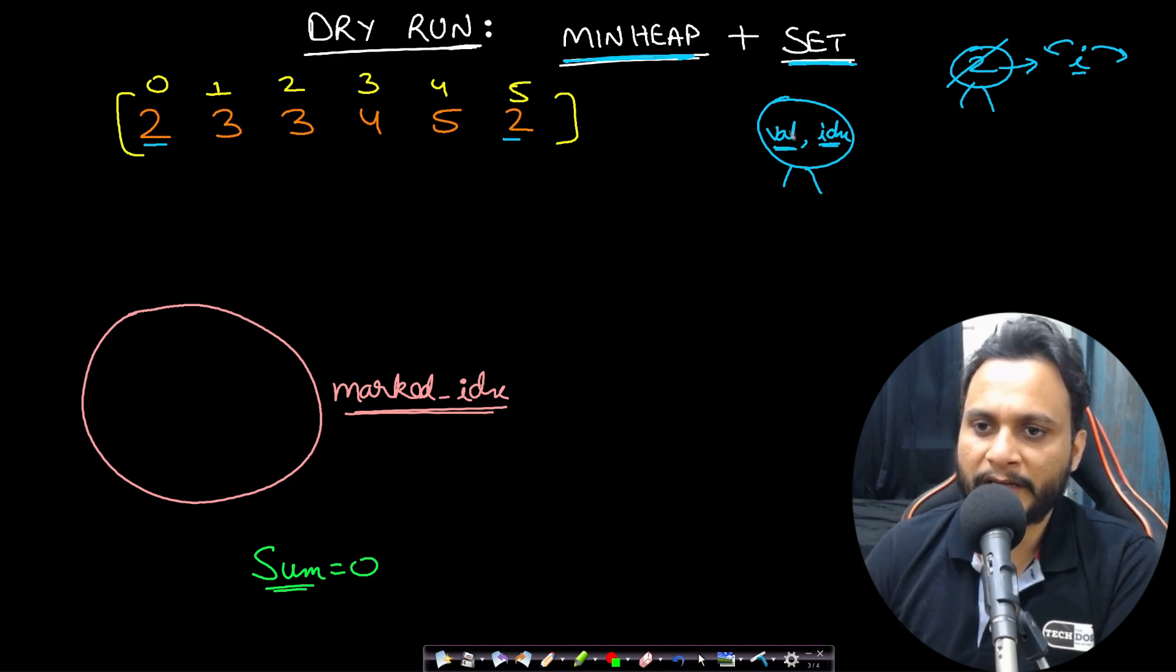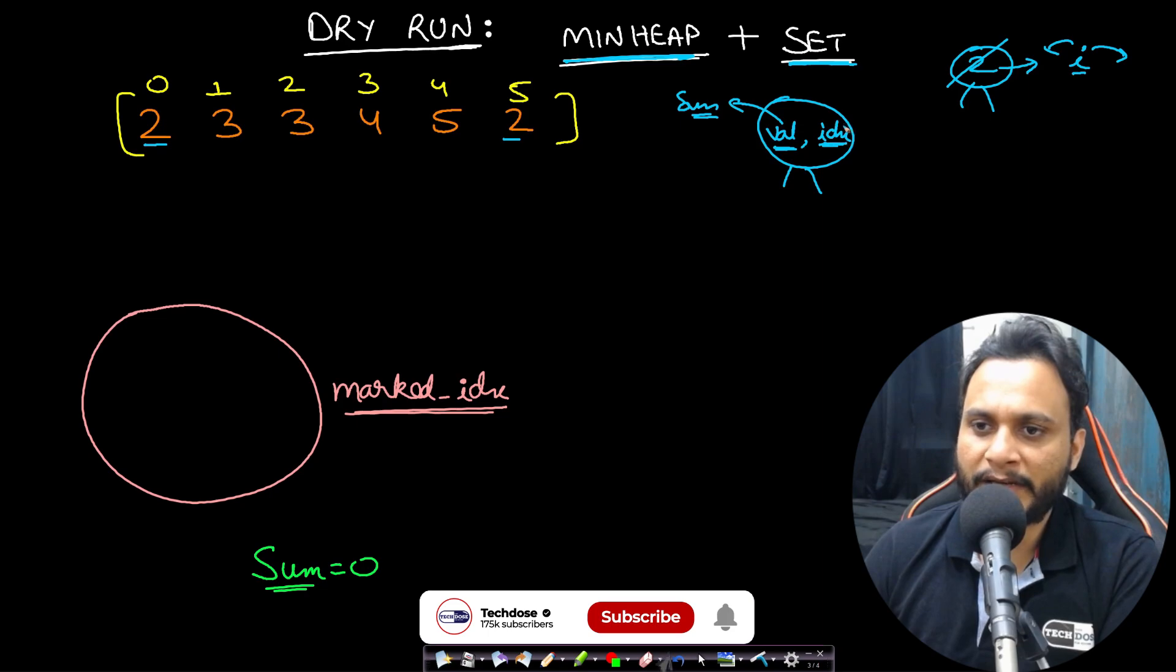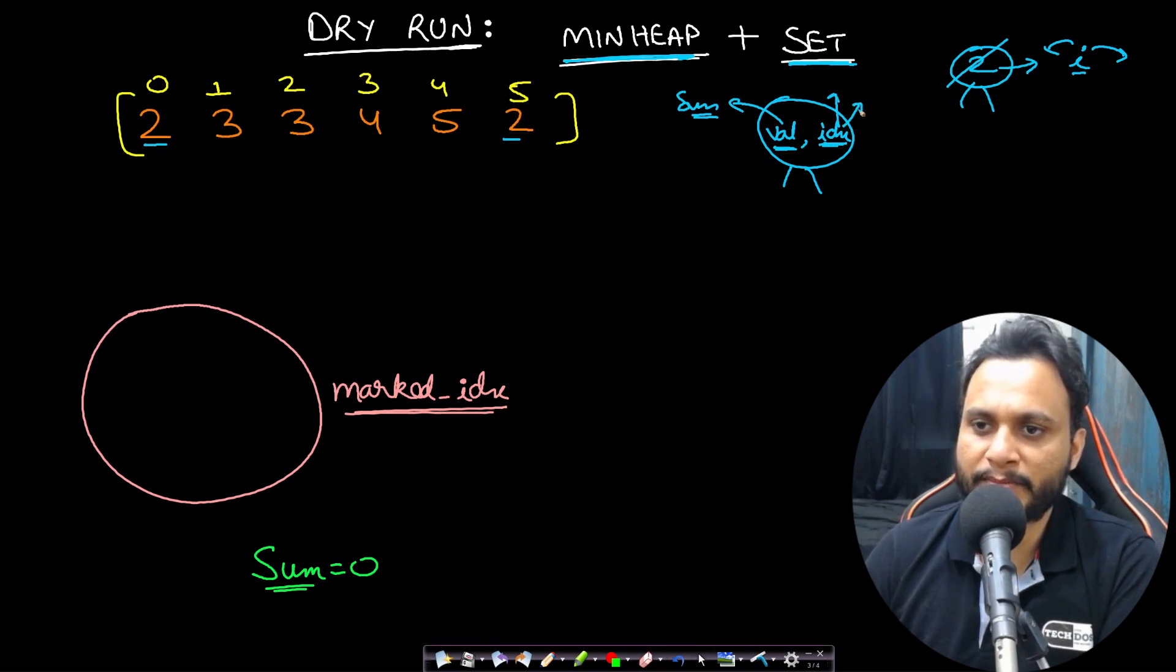So whenever I take out the minimum value, the value will get added to the score or the sum value and the index will actually be helping us to mark all the indices. That means index minus 1, index and index plus 1. Also, this index will tell us whether this has already been marked. If it is already present in the set means it is already marked. So let's do the dry run.